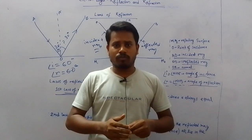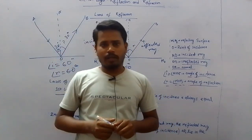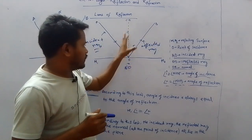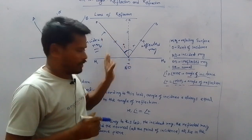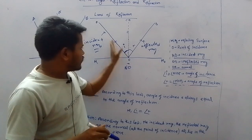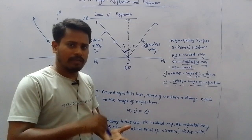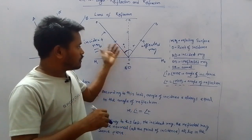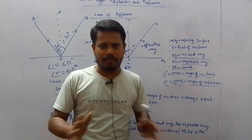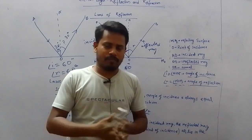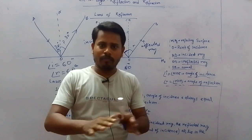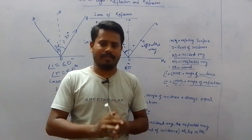The second law of reflection states that the incident ray, the reflected ray, and the normal NO always lie in the same plane. Here, that plane is the plane of the whiteboard. The incident ray, reflected ray, and normal cannot lie in different planes. When reflection takes place on any surface, these three always lie in the same plane.